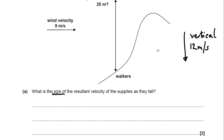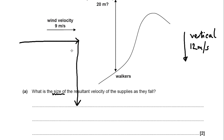The first method would be by scale drawing. If you measured out a horizontal velocity of 9 centimetres with a ruler, do that accurately, and then combine onto that the vertical velocity of 12 metres per second represented by 12 centimetres, then the resultant velocity would be right there. That's called a scale drawing — that would be the resultant velocity. You could just measure how many centimetres that was and write your answer down.